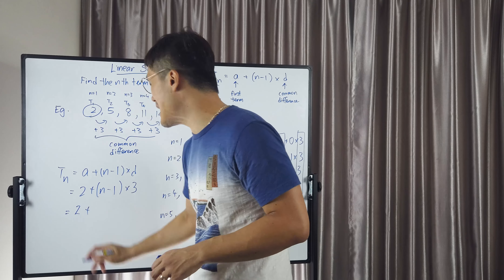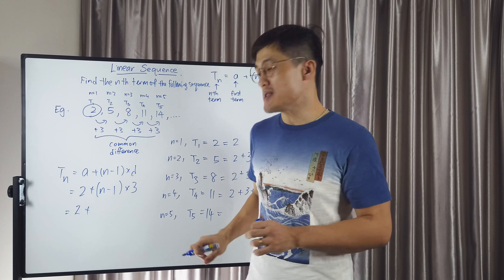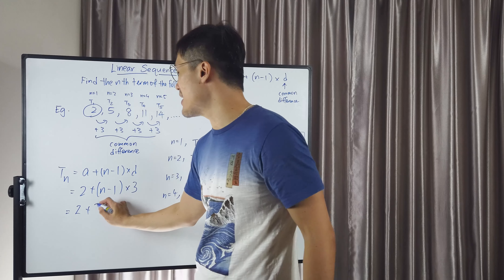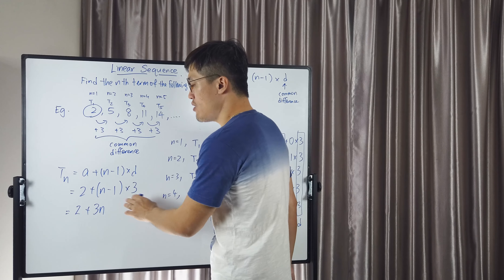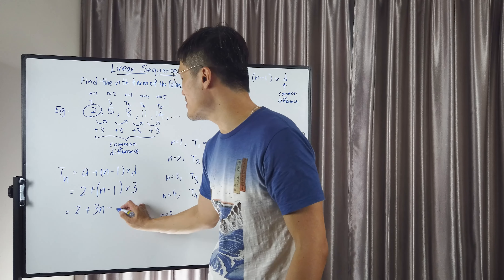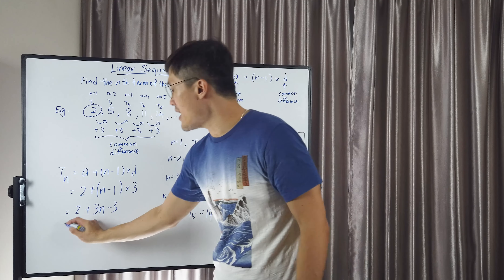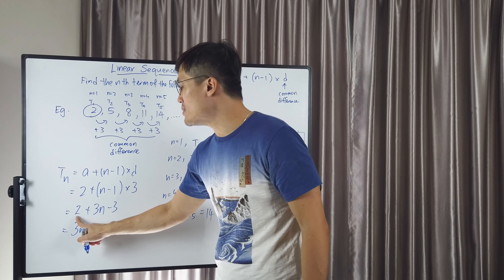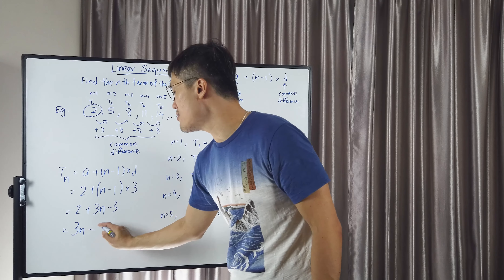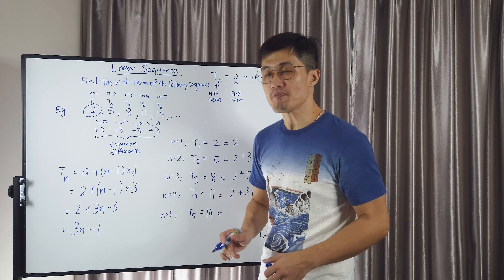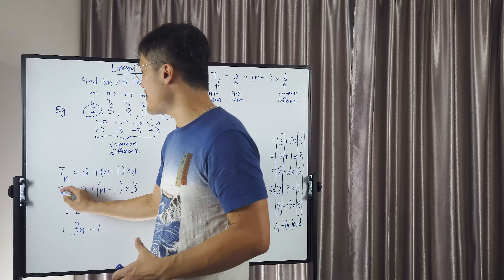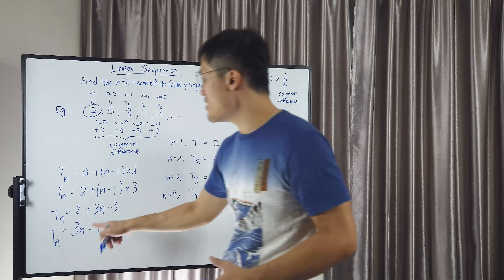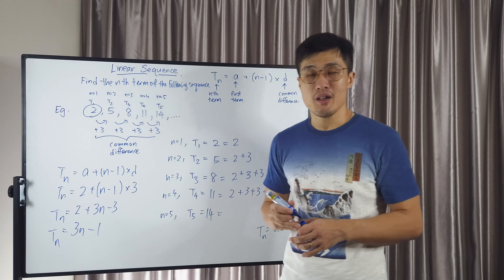So what you need to do is simplify the expression on the right-hand side. Two plus, by distributive property, you multiply the 3 with N to get 3N, and you multiply the 3 with negative 1 to get negative 3. What you have left is 3N plus 2 minus 3, which is minus 1. So T_N equals the simple formula 3N minus 1.